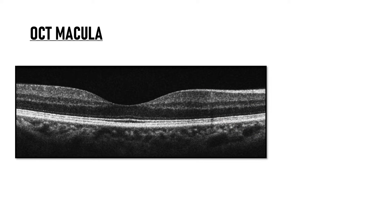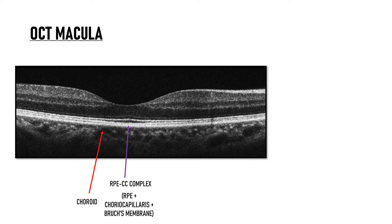Now let's identify the hyper-reflective layers as well. This is the choroid, and the hyper-reflective layer adjacent to the choroid is the RPE-CC complex, which is the outermost layer of retina. The RPE-CC complex consists of the RPE, choriocapillaris, and the Bruch's membrane. Internal to that is the photoreceptor layer, namely the inner segment-outer segment junction of photoreceptors. If you look closely, many different bands or zones can also be seen here, which we will learn about in detail a little later.